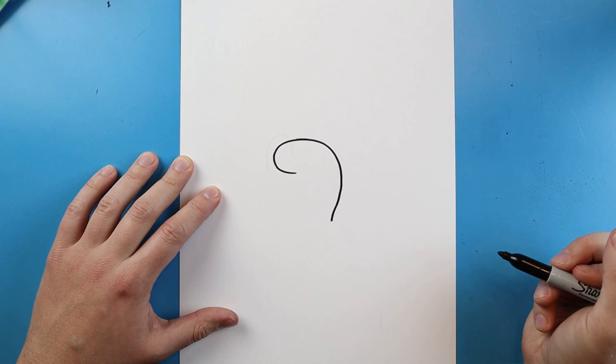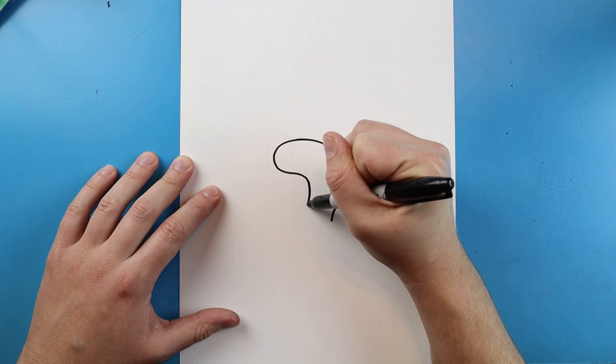Then starting here I'm going to draw a line that's just going to go out and then in. And then I'm going to do the same thing right here.